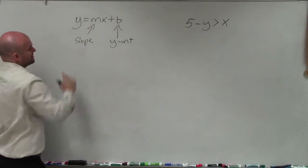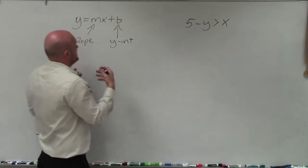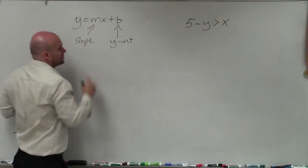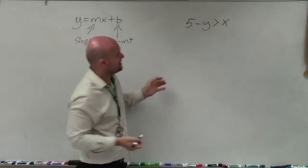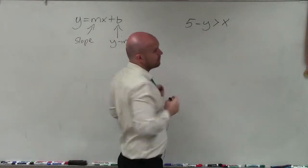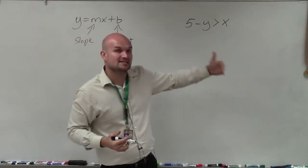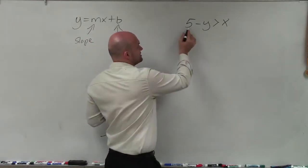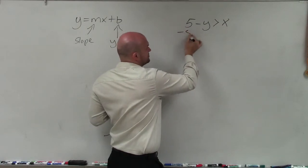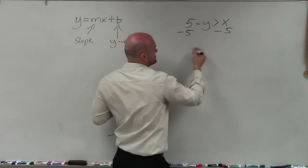And I know this is an inequality, but if we can rewrite it and solve for y, then we can identify the slope and the y-intercept. So to solve for y, basically what I need to do is isolate my y variable. I always want to undo what's happening to the variable. The first thing we always want to undo is addition and subtraction. So I can see that my 5 is being added to my variable, so I'm going to subtract 5 on both sides.